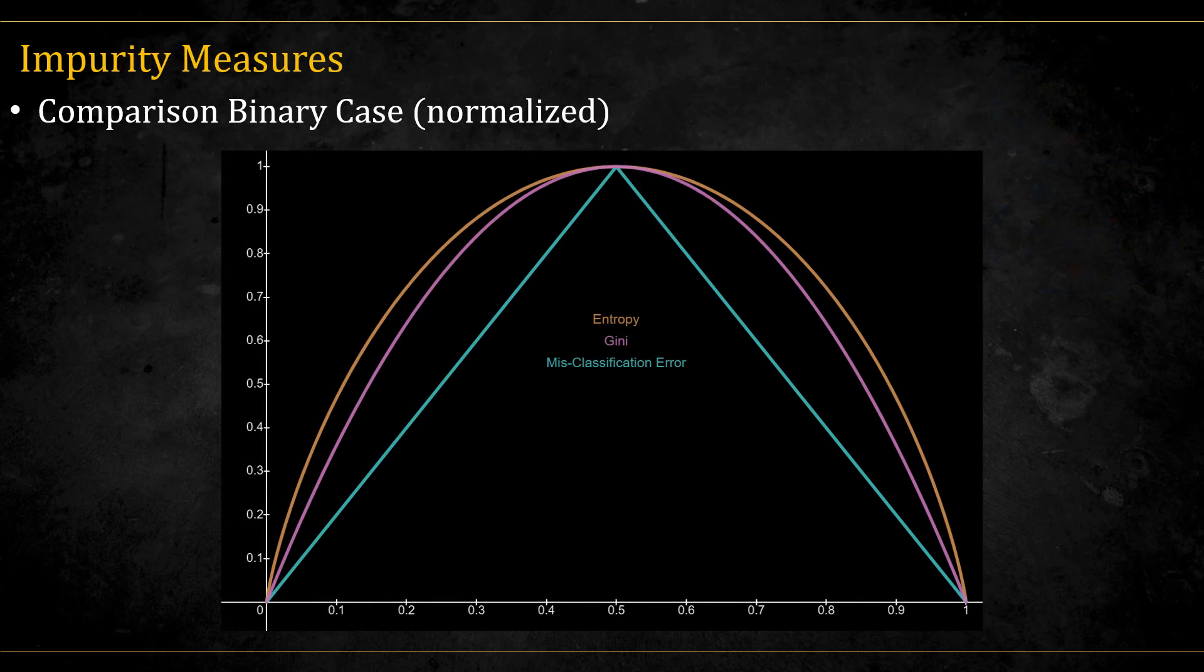Here you can see a graph of all three of these impurity measures together, where we also normalize them to have a maximum of one. You can see the genie and the entropy are quite close to each other. The genie being a bit steeper around 0.5 and the entropy a bit steeper around 0 and 1.